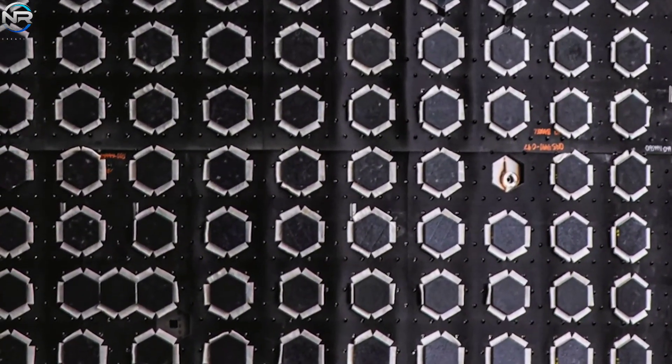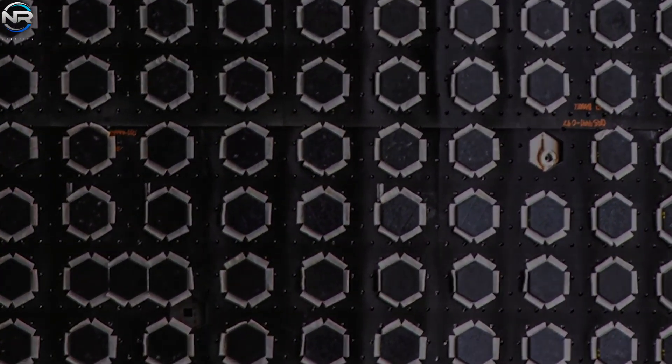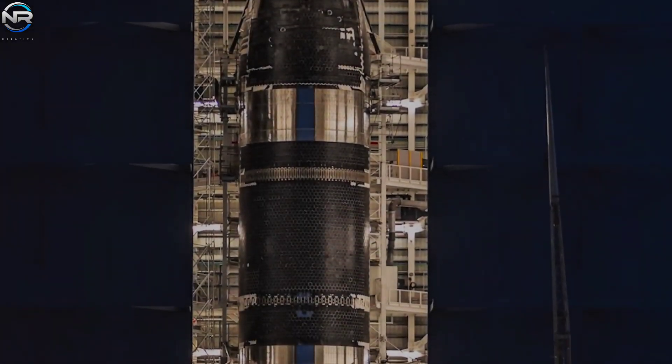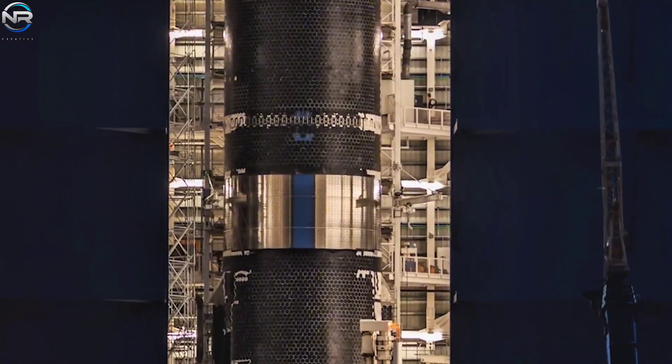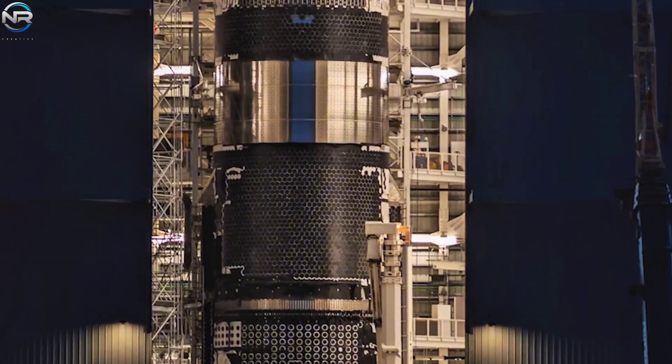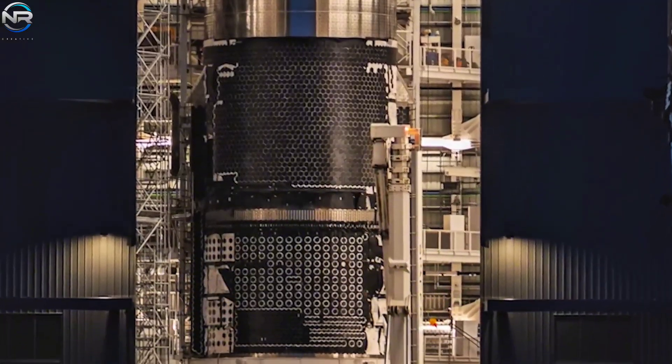We can't see the entire spacecraft 37 yet, because it's deep inside Megabay 2. However, we can get a better look at spacecraft S38, which likely shares many of the same features. On spacecraft 38, the white lines between the tiles are now much more visible.